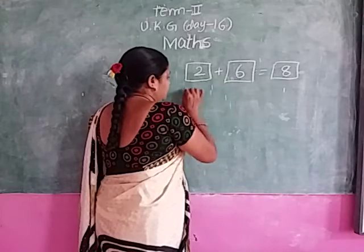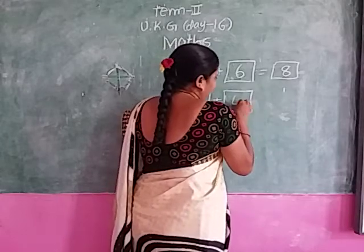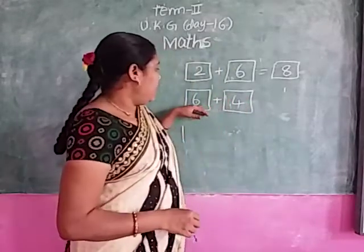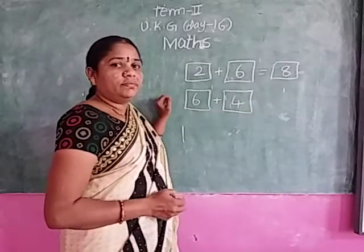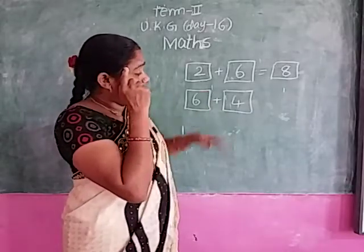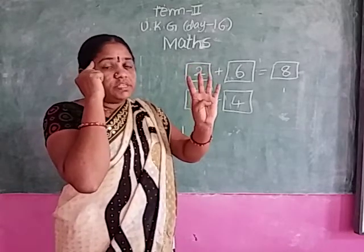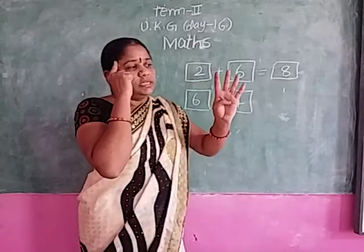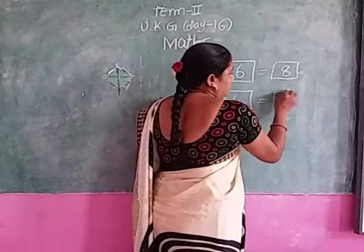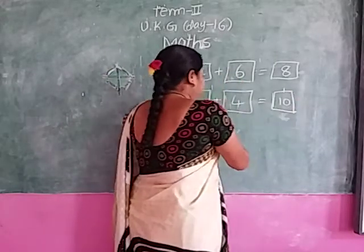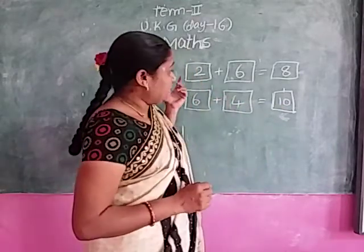I have 6 flowers. My uncle gives me 4 more flowers. Which is the greater number? 6. Keep 6 in your mind. Which is the smaller number? 4. Open 4 fingers — 1, 2, 3, 4. After 6: 7, 8, 9, 10. 6 plus 4 equals 10. You should practice the addition on the slate.